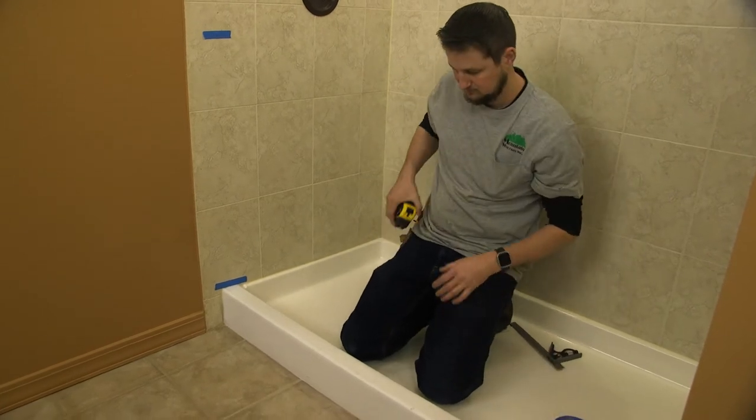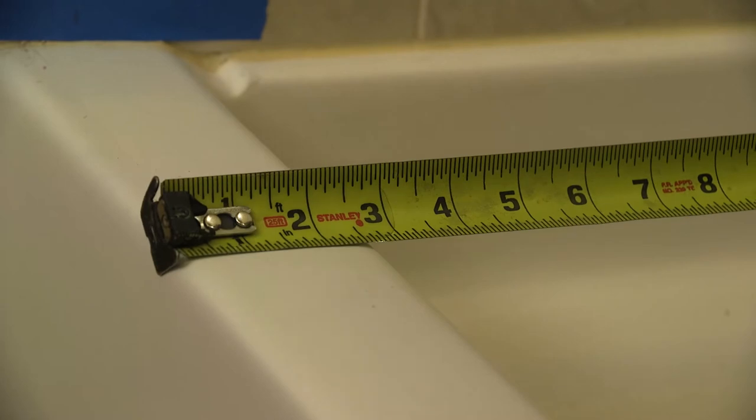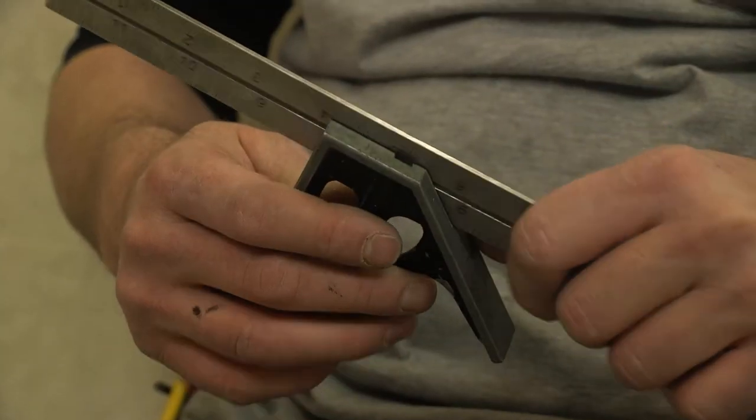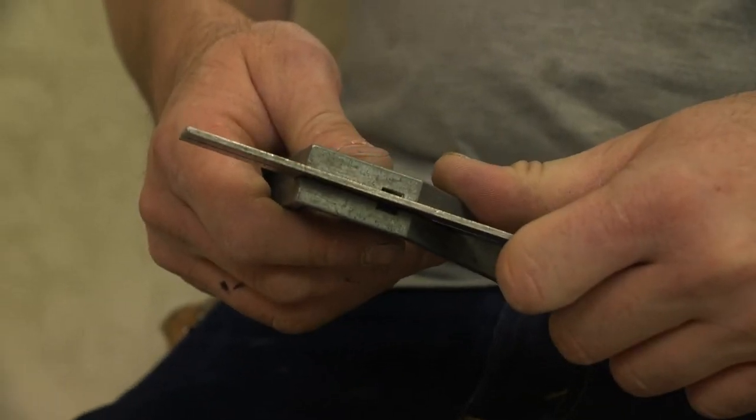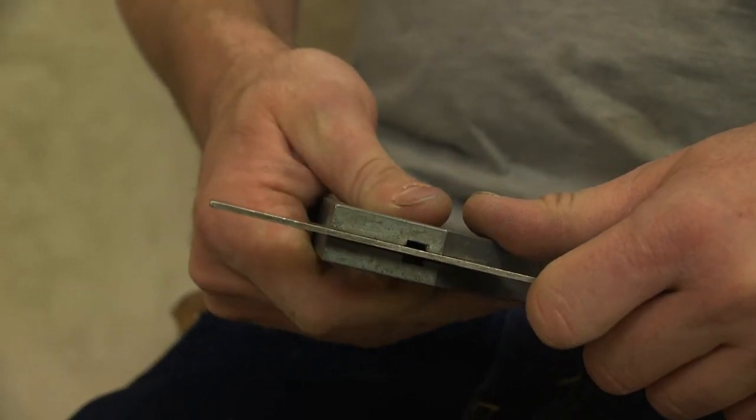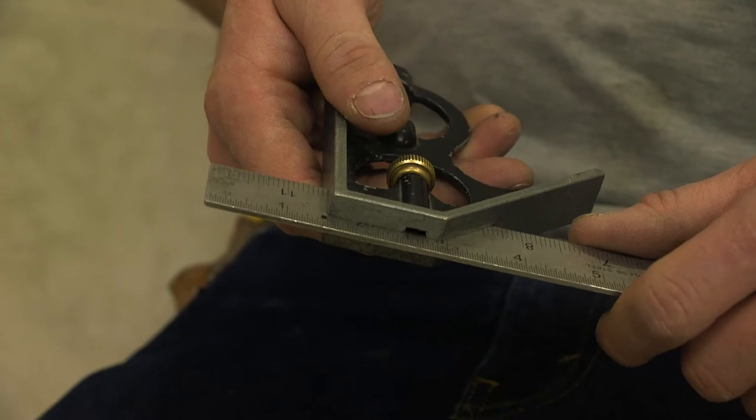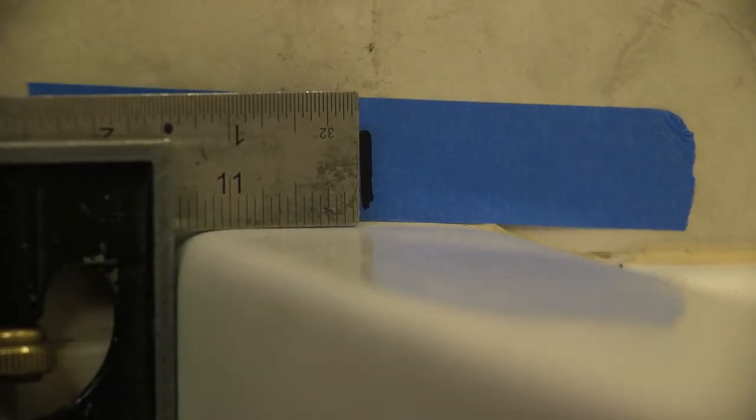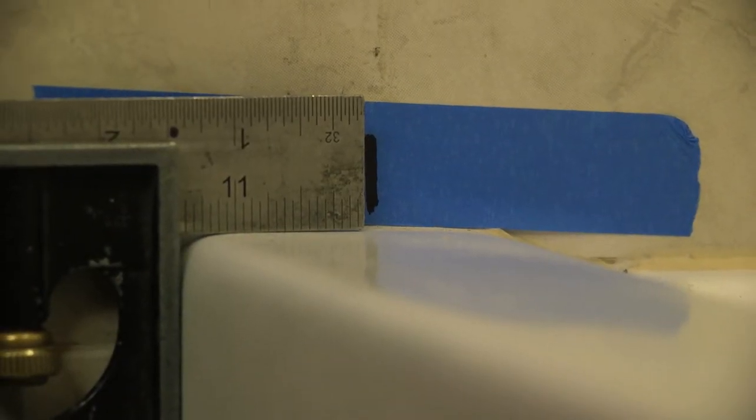Measure the depth of your threshold. Again, this is where your enclosure will be installed. Be conscious of this depth when selecting your enclosure to ensure it fits on the threshold. A combination square is helpful during this step. Mark the center point of the threshold depth. Make the same mark on the opposite side of the threshold.